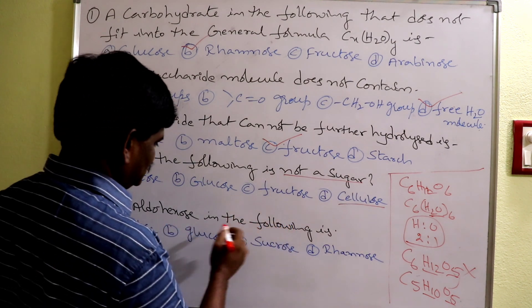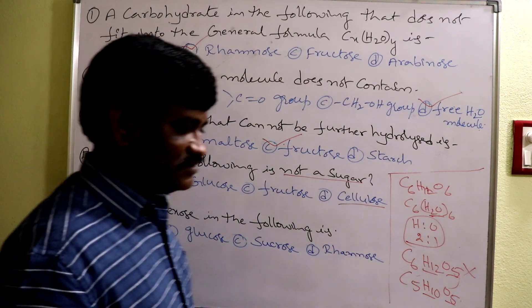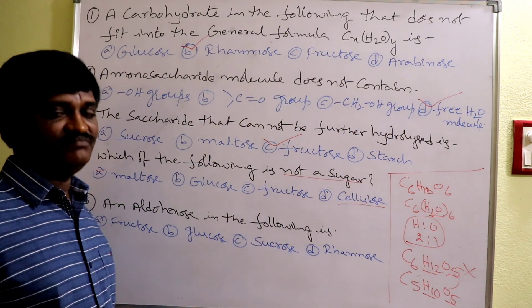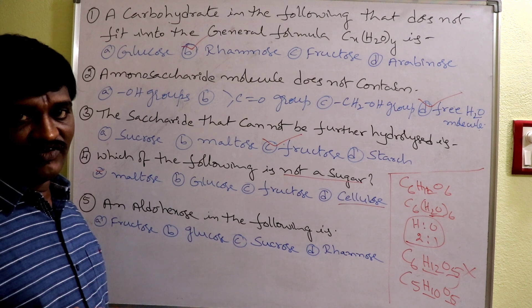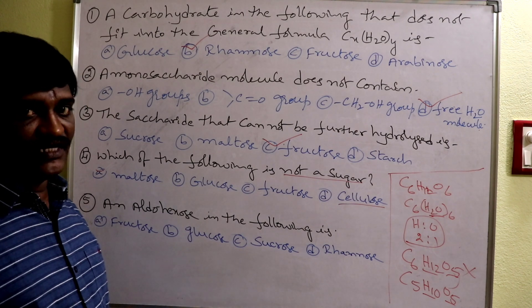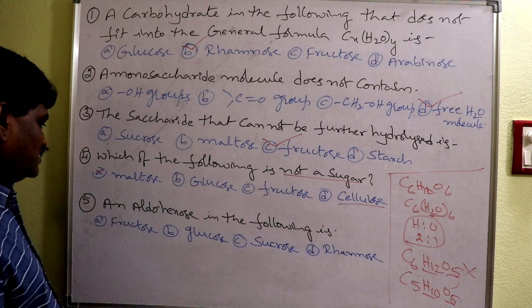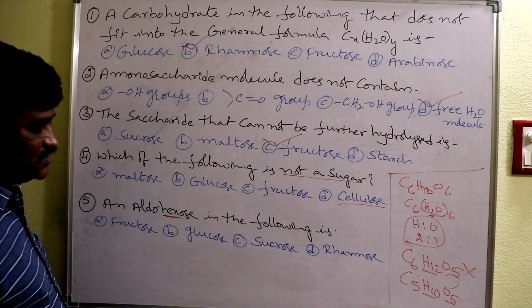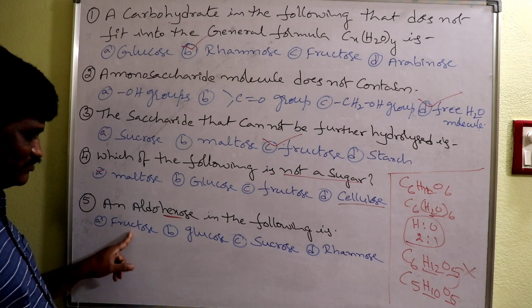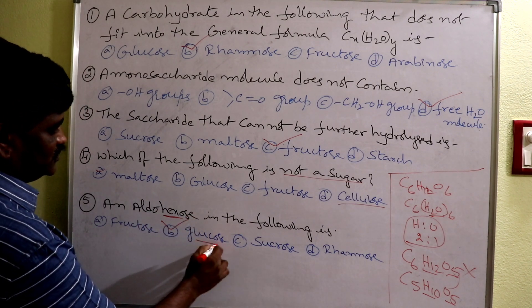Aldo hexose — based on number of carbon atoms and functional group: 3 carbons = aldotriose; 4 carbons = aldotetrose; 5 carbons = aldopentose; 6 carbons = aldohexose; 7 carbons = aldoheptose. Fructose has 6 carbons but a ketonic functional group — very important. Glucose has 6 carbons with an aldehydic functional group, so glucose is an aldo hexose. Answer: glucose.